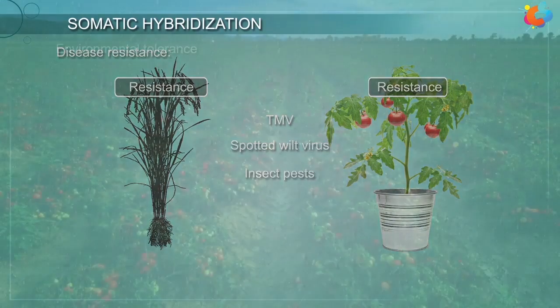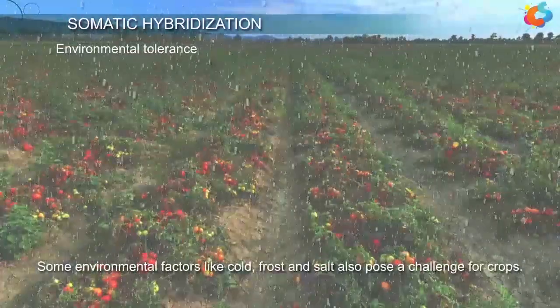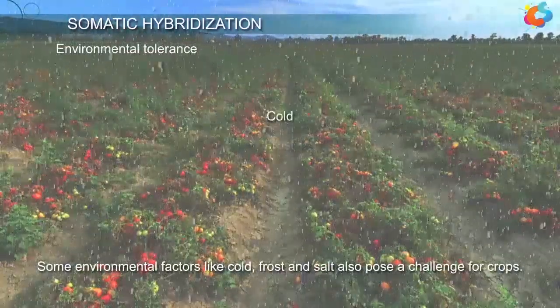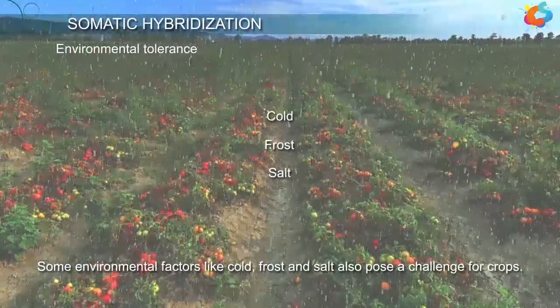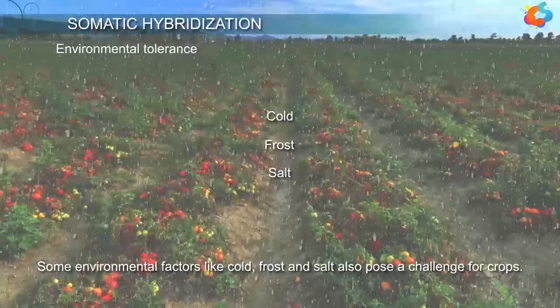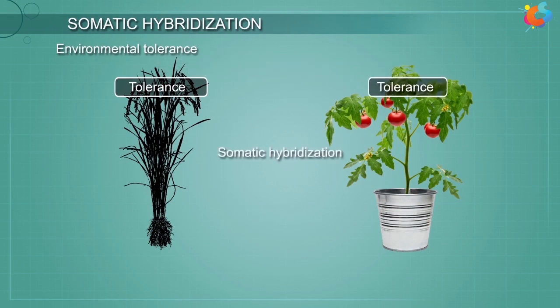2. Environmental Tolerance. Some environmental factors like cold, frost, and salt also pose a challenge for crops. The genes responsible for the tolerance of such factors have been successfully introduced through somatic hybridization. For example, introduction of cold tolerance gene in tomato.